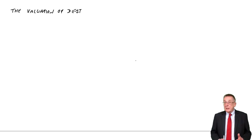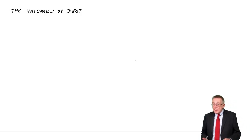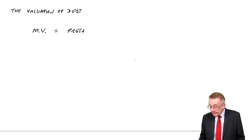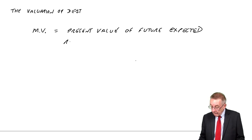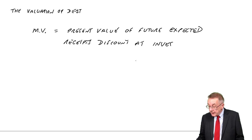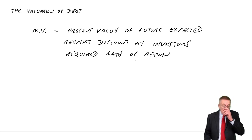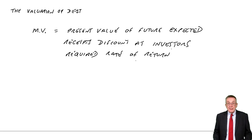In the first lecture, I went through the valuation of equity and the dividend valuation formula. In this lecture, I want to look at the valuation of debt. The principle is exactly the same — the market value of debt is equal to the present value of future expected receipts, discounted at the investor's required rate of return. Debt lenders aren't getting dividends; they're getting interest instead.